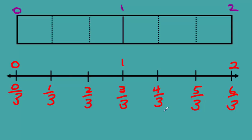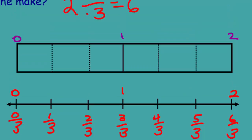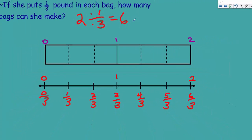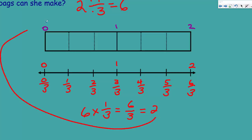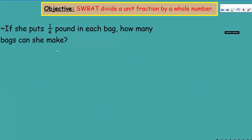How can we check our work? We said two divided by one third equals six. Take the quotient six, multiply by the divisor one third: six times one third equals six over three, which equals two. That brings us back to our dividend — it works! We're modeling mathematics every time.